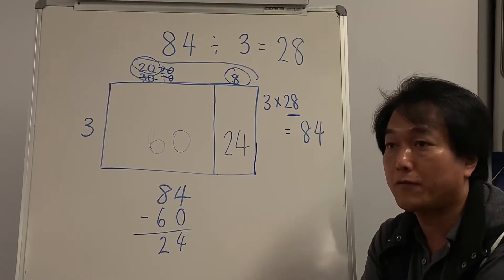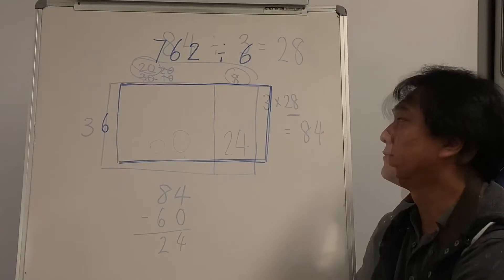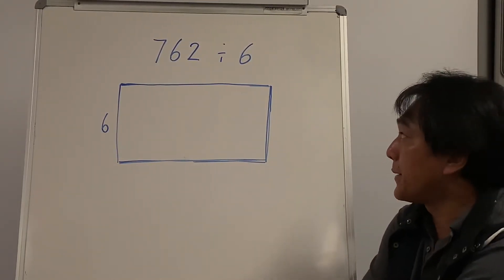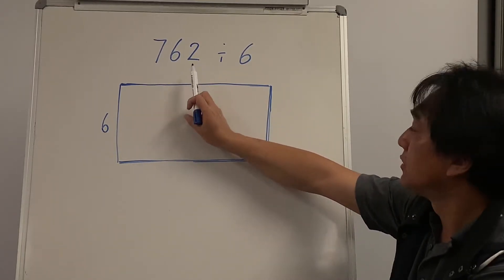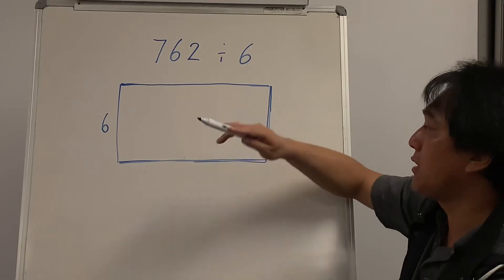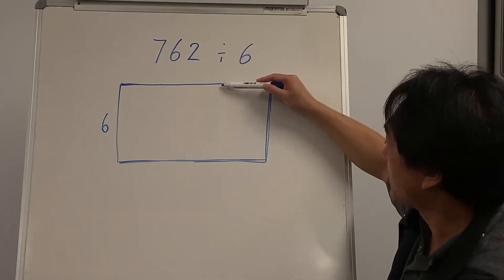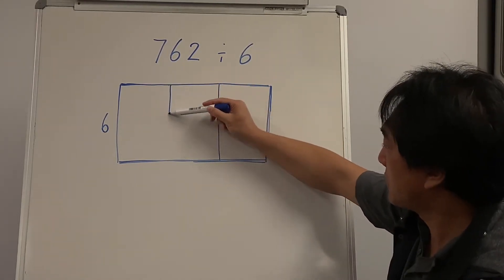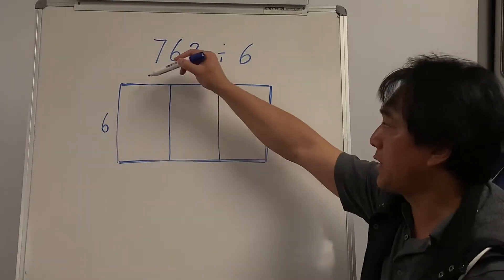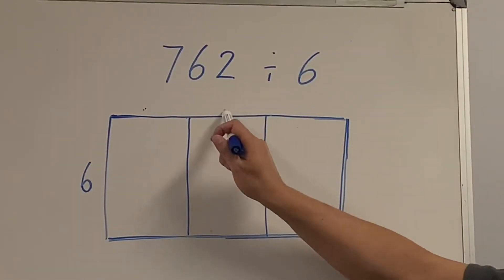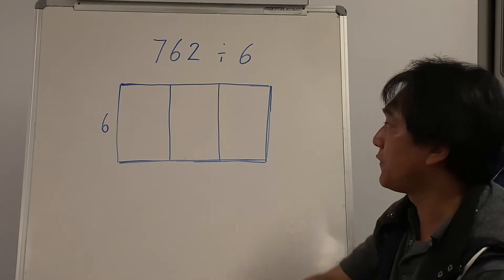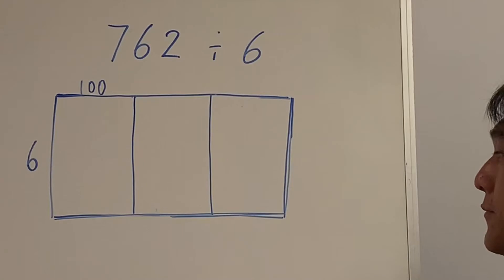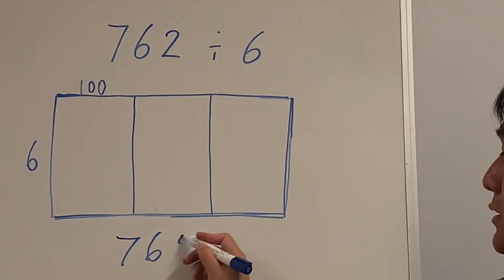Now we're going to make it slightly harder for grade 4, 5, and 6 students: 762 divided by 6. This time we have three digits, so let's divide the box into three different boxes — hundreds, tens, and units. We have 762 cupcakes.